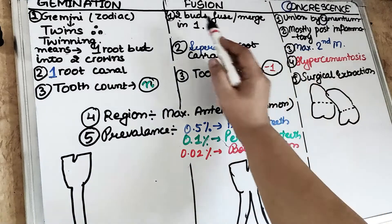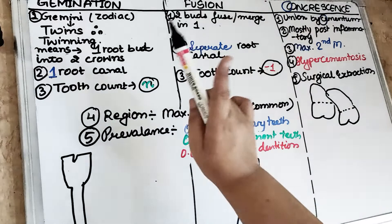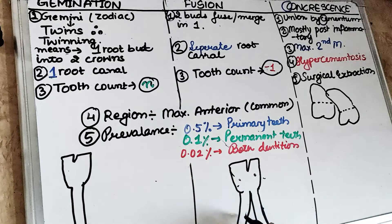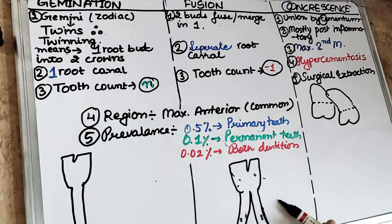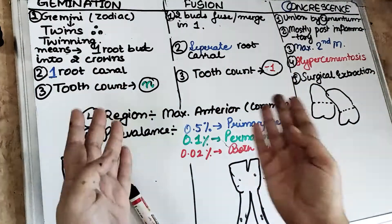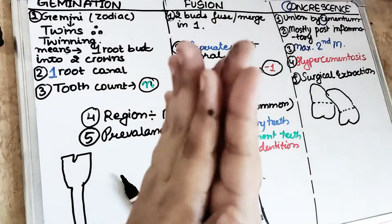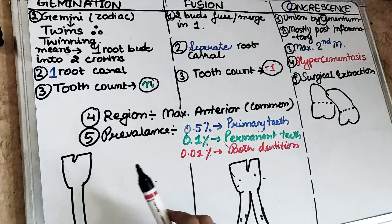Coming to fusion: there are two buds which fuse or merge to form one crown. As you can see in the example, there are two crowns with two separate canals, but the two crowns fuse to form a single crown — that is fusion. As the name suggests, fusion means two tooth buds fuse to each other. Gemination means twinning — one root with two crowns splitting. So there is one root but two crowns in gemination.